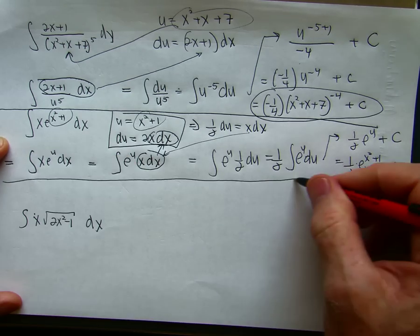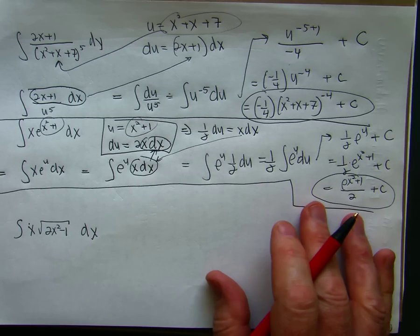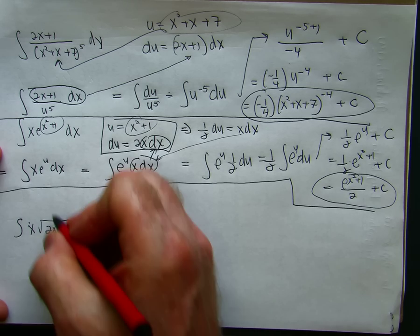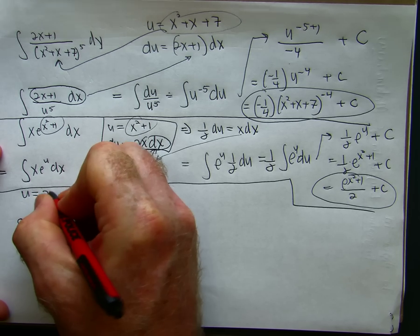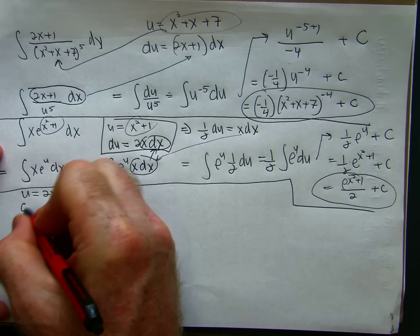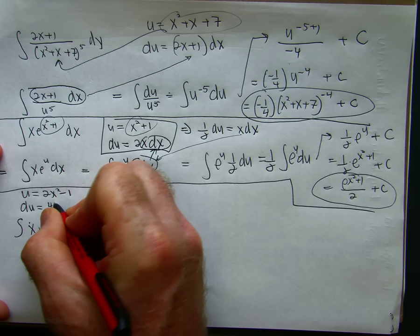Okay. So again, I'll do the last one. And if you're getting the hang of this, feel free just to go right to the homework. So again, here's my u. u is 2x squared minus 1. That's what's inside the radical. du is 4x dx.